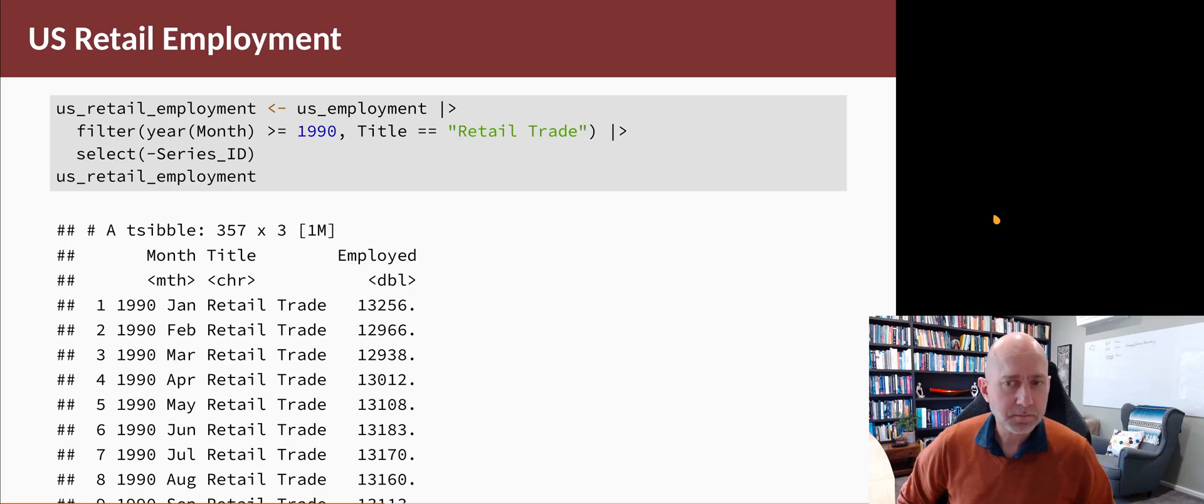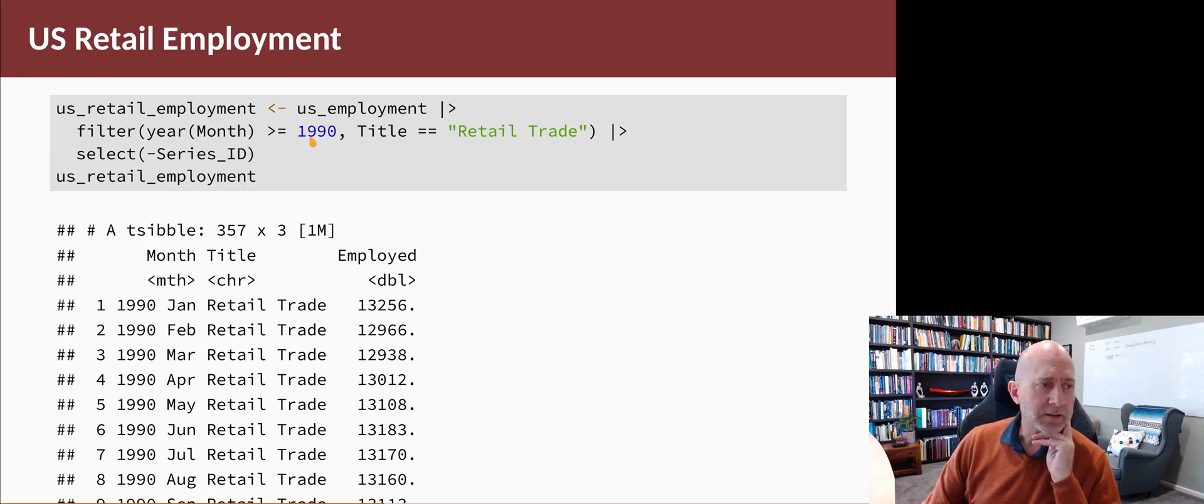Let's look at an example. We'll take US employment data and pull out data since 1990, only for retail trade. The resulting object looks like this.